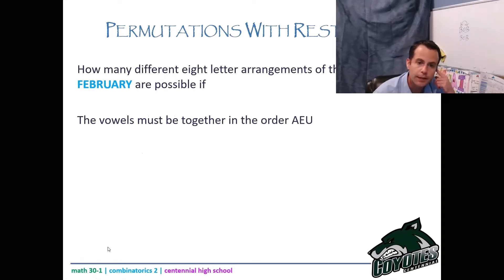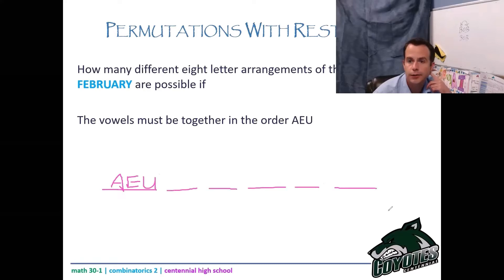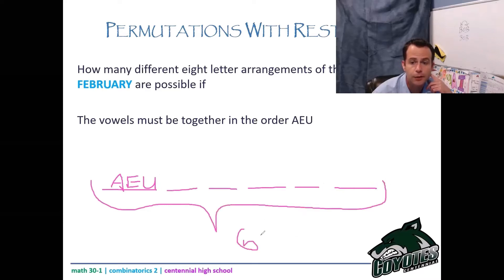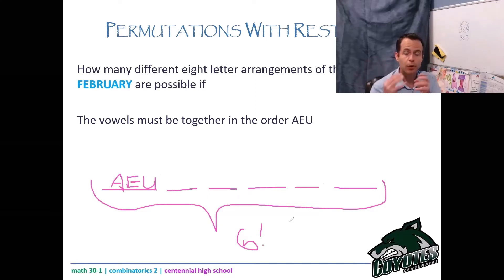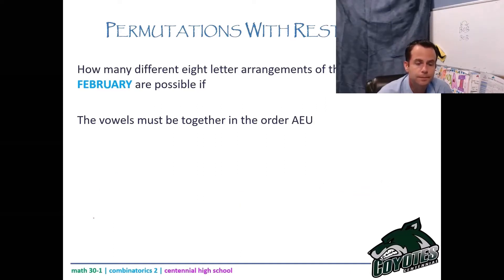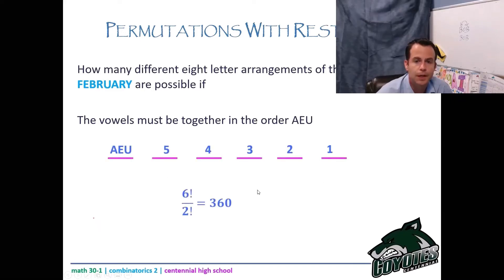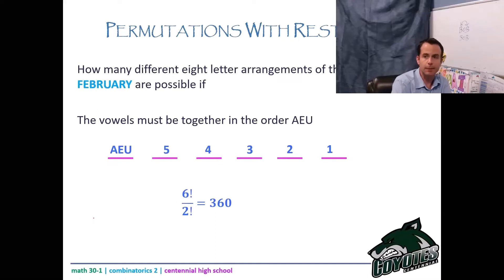What if the vowels A, E, U must be together in a fixed order? We glue them together into one spot, giving us 6 total positions to arrange. So that's 6 factorial arrangements. But we still divide by 2 factorial for the two R's. That gives 6 factorial divided by 2 factorial, which equals 360.